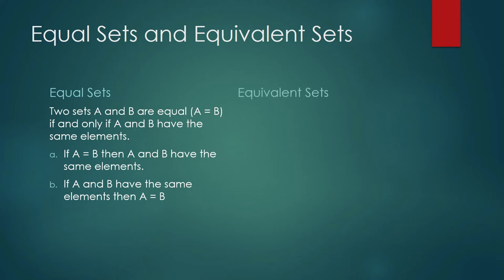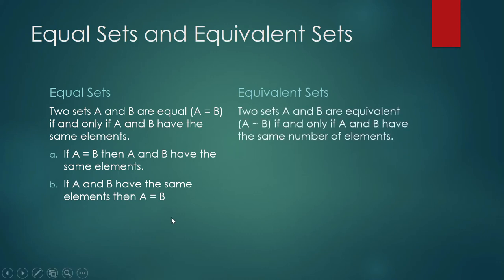What about equivalent sets? When are two sets equivalent? Two sets A and B are equivalent, and that is how we write it, if and only if A and B have the same number of elements. So this is like a compound statement or compound sentence, and it is composed of two sentences. If A is equivalent to B, then A and B have the same number of elements.